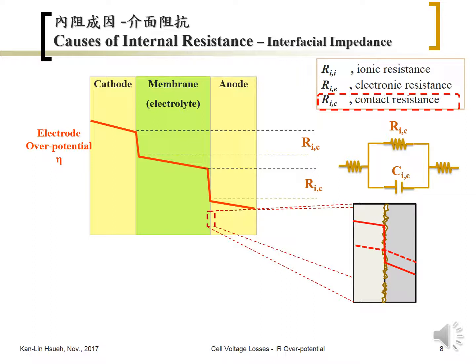In summary, the internal resistance can be classified into ionic resistance, electronic resistance, and contact resistance. The equivalent circuit represents all three components in series, modeling the full ohmic behavior of the cell.